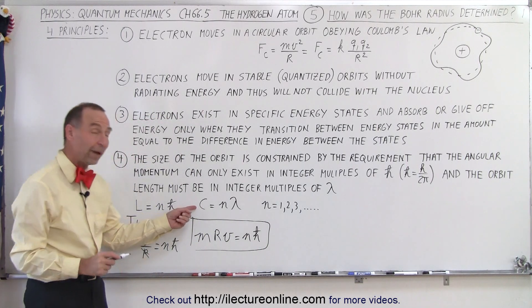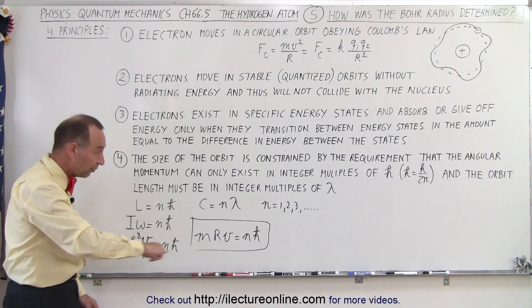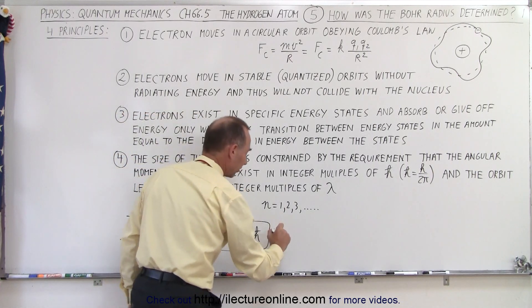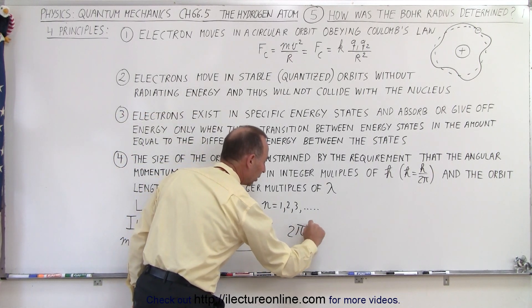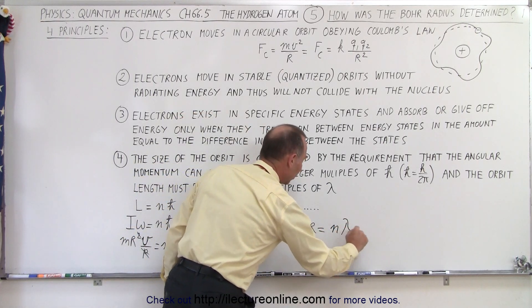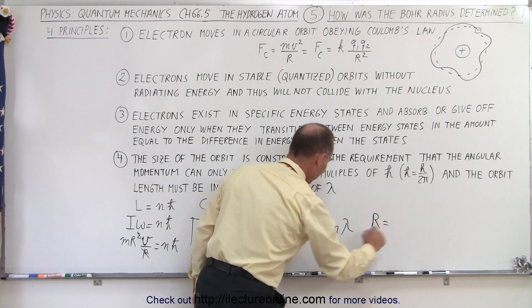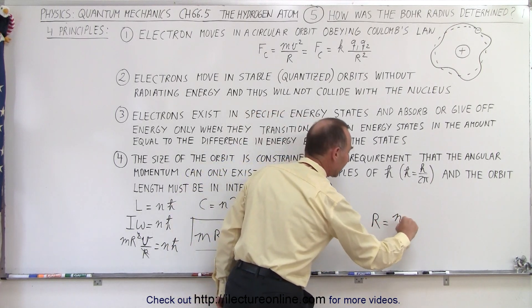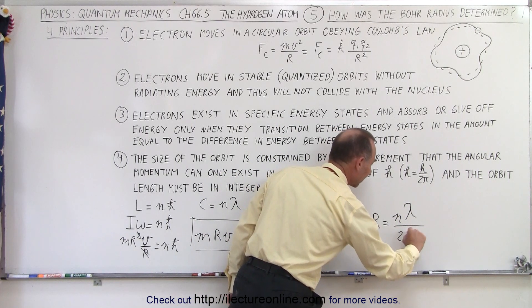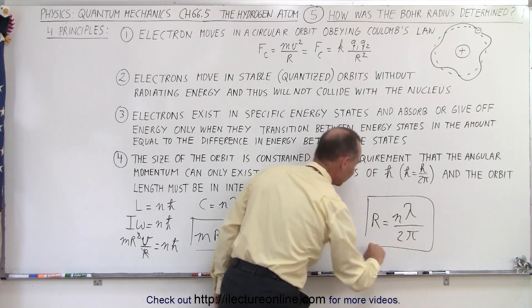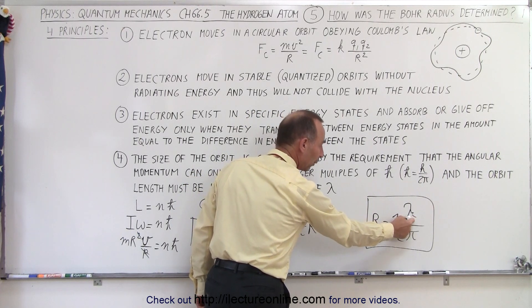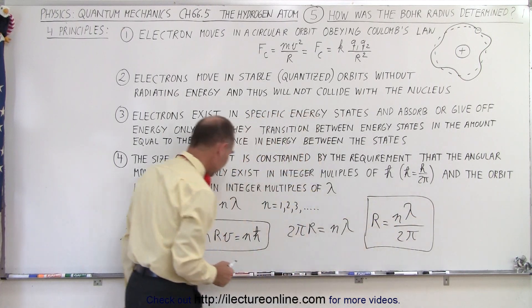The next condition we have from here, where the circumference of the orbit had to be equal to an integer number of wavelengths, we can say that the circumference, which is 2πr, had to be equal to n times lambda. So the radius is going to be equal to n times lambda divided by 2π. If we knew the velocity, we can figure out the wavelength, and if we know the wavelength, we can figure out the radius.